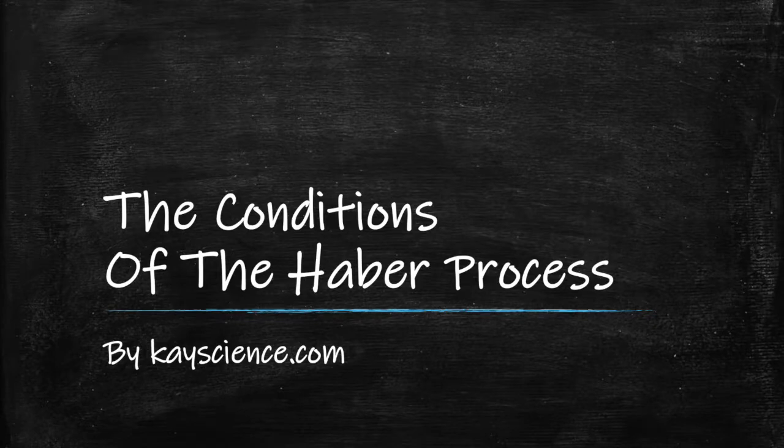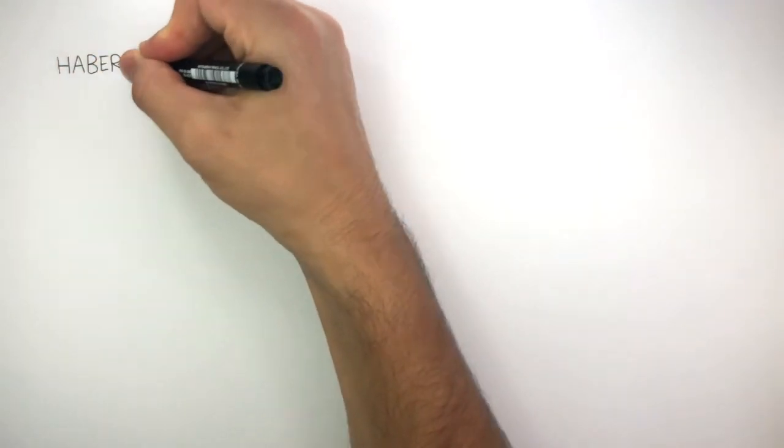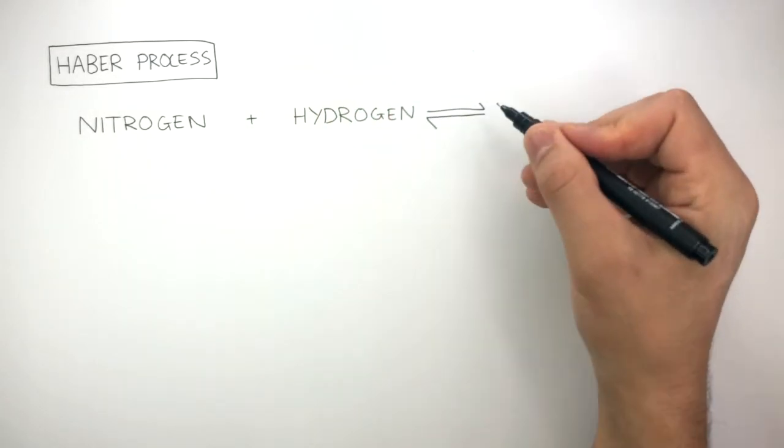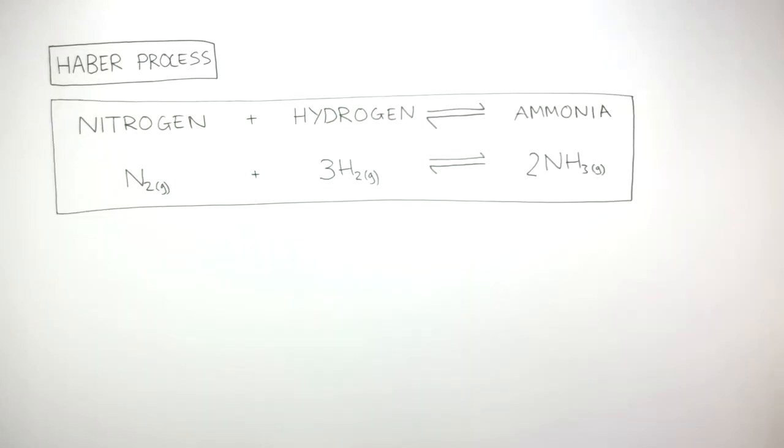The conditions of the Haber process. The Haber process can be summarized by the word equation: nitrogen reacting with hydrogen to form ammonia in a reversible reaction.